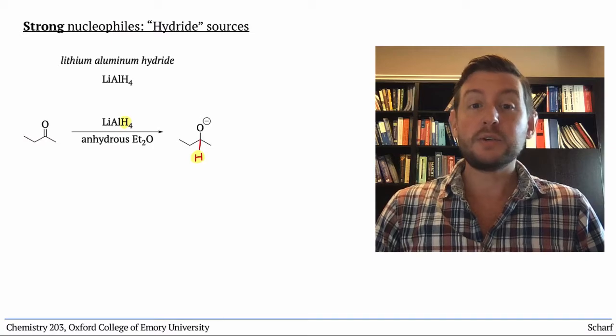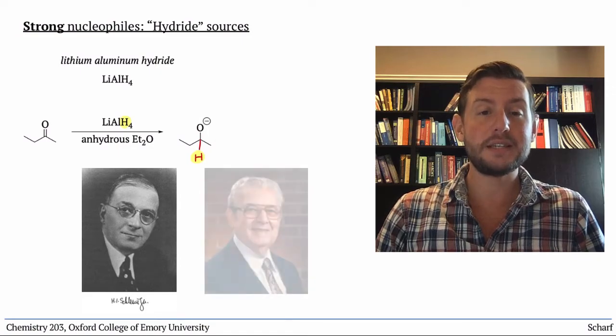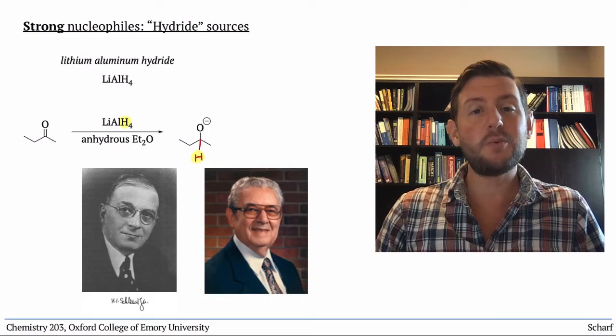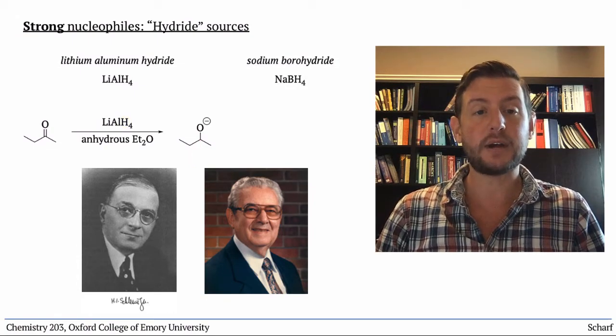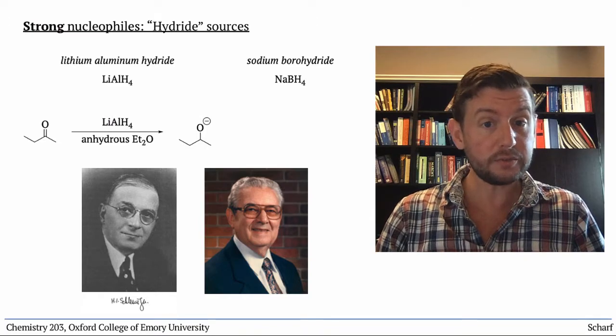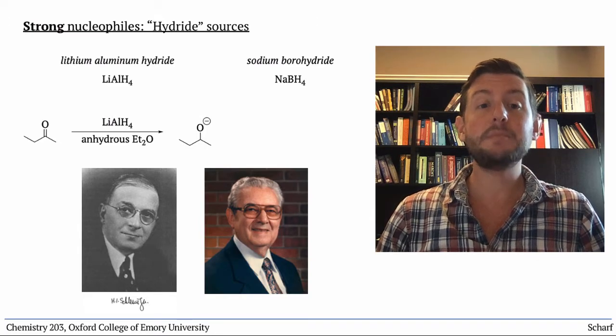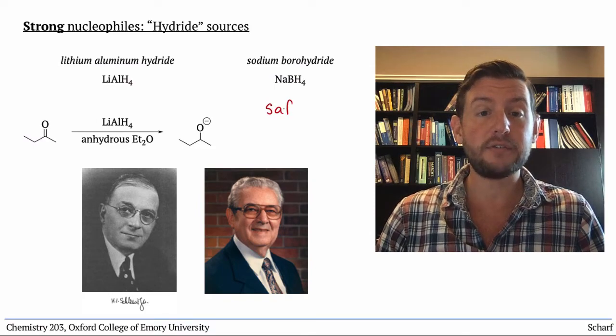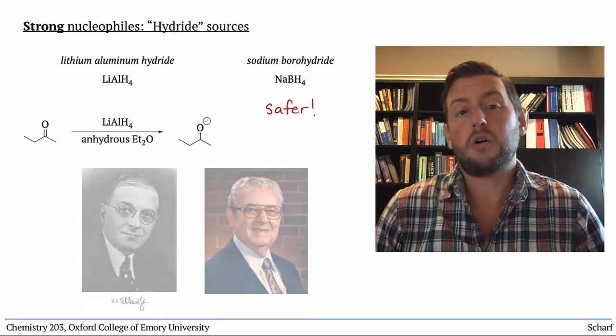So in 1940, two clever chemists, Hermann Schlesinger and Herbert C. Brown, discovered a more tame hydride source called sodium borohydride, NaBH4, which also reacts with ketones and aldehydes like lithium aluminum hydride, but can be safely stored in a bottle on a shelf and can be used in protic solvents, typically alcohols.